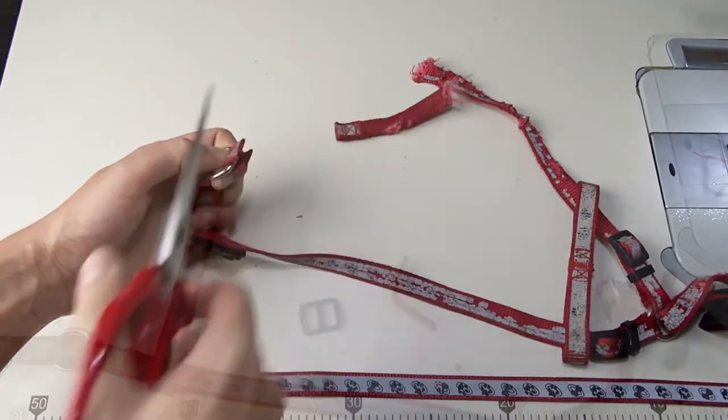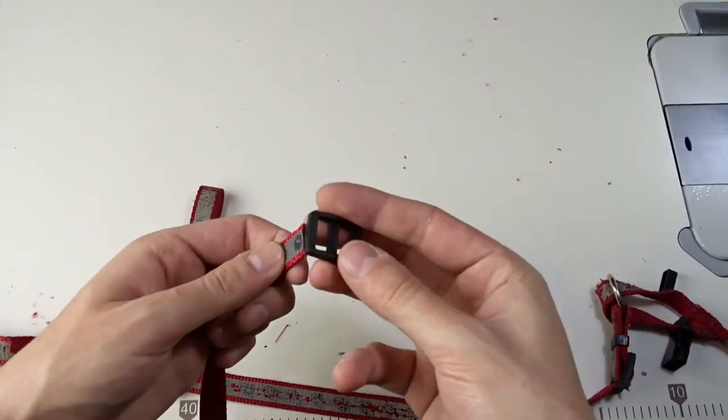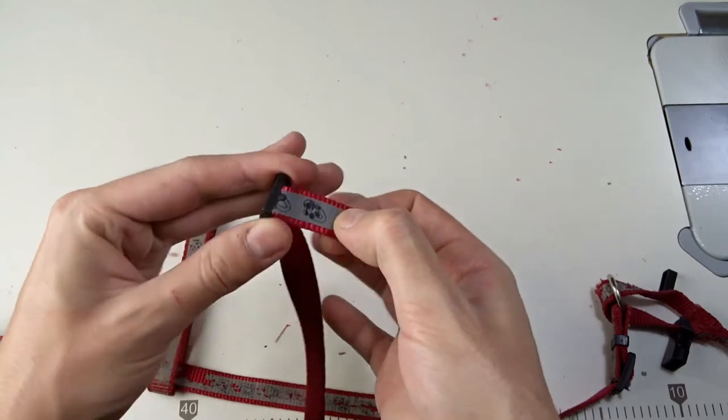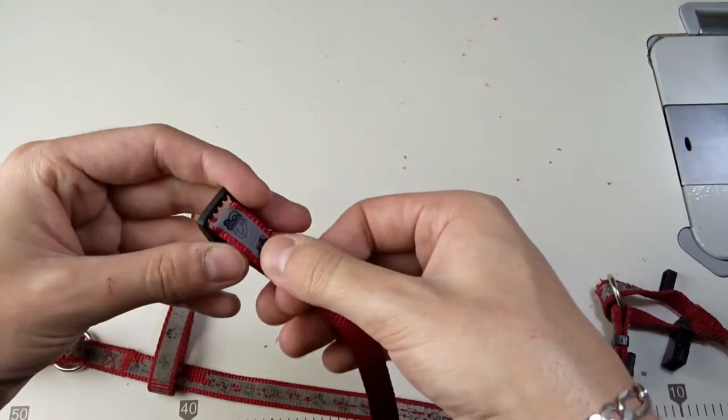I will sew the webbing from the side with the plastic regulator. Pass the new piece of webbing through the regulator and sew it as shown in the video.